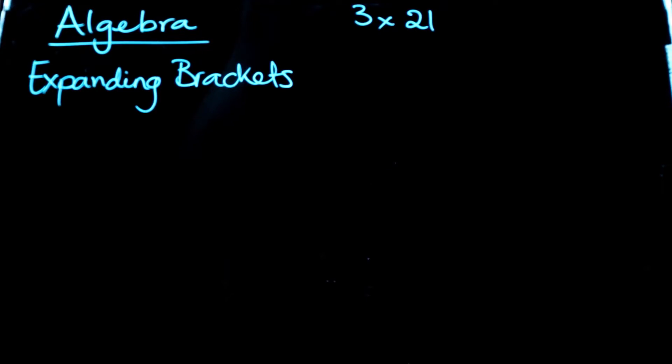So one way to do 3 times 21, let's write the answer, it's not that hard, 63. What I'm trying to get across to you is that we can see this as 3 times 20 plus 1.